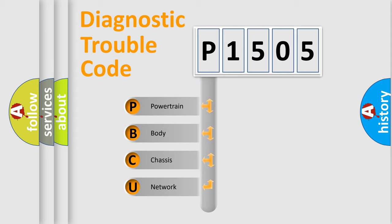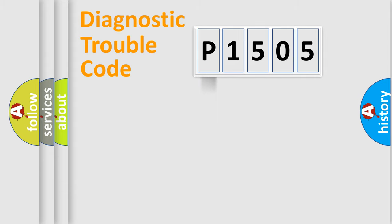We divide the electrical system of an automobile into four basic units: Powertrain, Body, Chassis, and Network. This distribution is defined in the first character code.